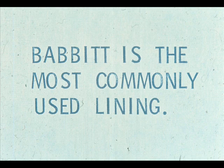Babbit is an alloy made of several metals, which is applied as a thin coating over the shell. In larger sleeve bearings for heavy-duty equipment, a thicker layer of babbit is used to line a rigid backing of steel, bronze, or cast iron.